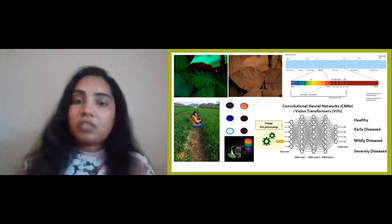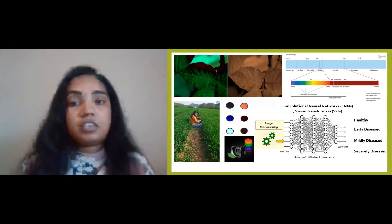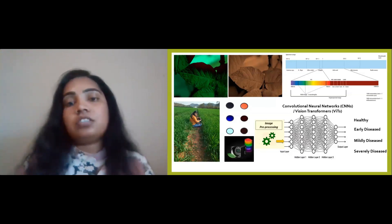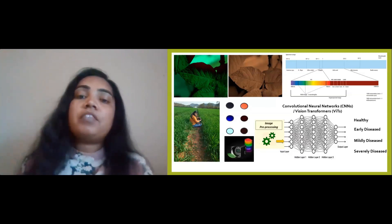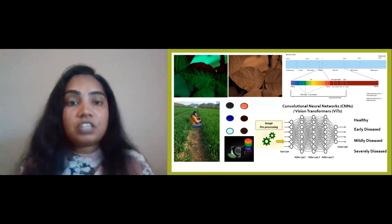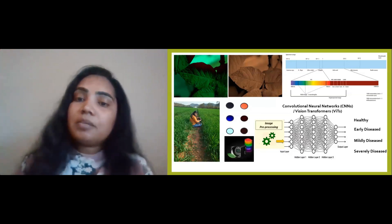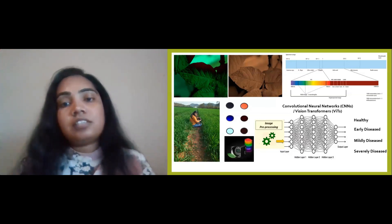Then we perform preprocessing on these images before feeding them to state-of-the-art deep learning technologies. These deep learning models are the superheroes that apply their superpowers to extract important features and classify healthy plants and different stages of diseases.